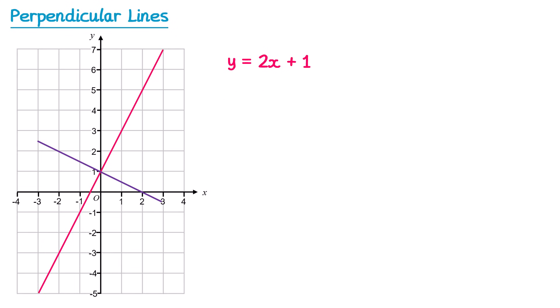Let's have a look at calculating the equation of the line using the original method. Let's pick two points on the line and use a gradient triangle. We do the change in y, which is negative 1, and the change in x which is 2. The gradient is then the change in y over the change in x, so negative 1 over 2, which is the same as negative one half. So the gradient of the purple line wasn't negative 2 — it was negative one half. So the equation of the line would be y equals negative one half x plus 1.